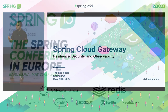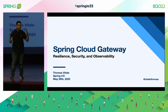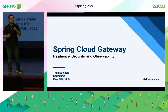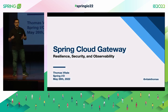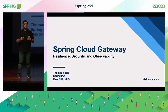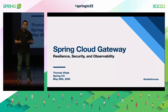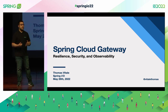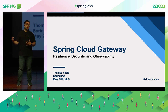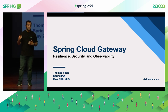I hope you're doing great. I'm really happy to be here at SpringIO 2022. Today, we're going to see how to implement the API Gateway pattern using Spring Cloud Gateway. But we're going to do much more than that, because we're going to look at some very useful and important cross-cutting concerns in any distributed systems: resilience, security, and observability.